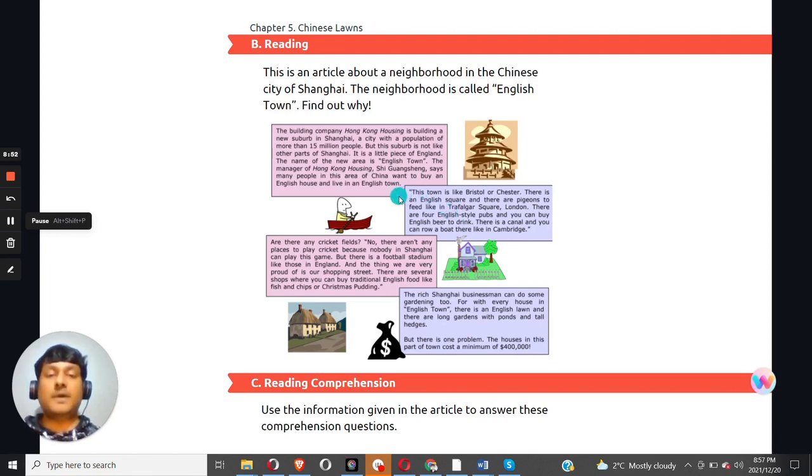Moving on to the second paragraph. This town is like Bristol or Chester. There's an English square and there are pigeons to feed like the Trafalgar Square London. There are four English style pubs and you can buy English beer to drink. There's a canal and you can row about there like in Cambridge. Okay. So lots of activities to do. It sounds really fun. Let's move on to the next paragraph.